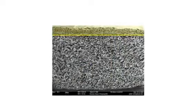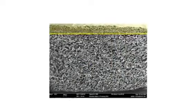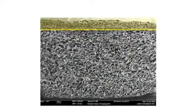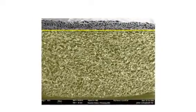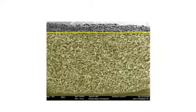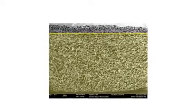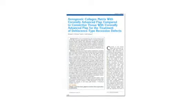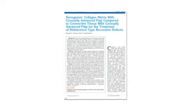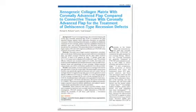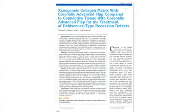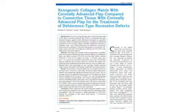Mucograph is a bilayer matrix. The compact layer provides strength and allows the matrix to be easily sutured. The spongy layer is designed to add volume and scaffolding for vascularization and soft tissue integration. Several recent randomized controlled clinical studies have verified the effectiveness of mucograph in treating gingival recession defects, comparing favorably to connective tissue grafts.